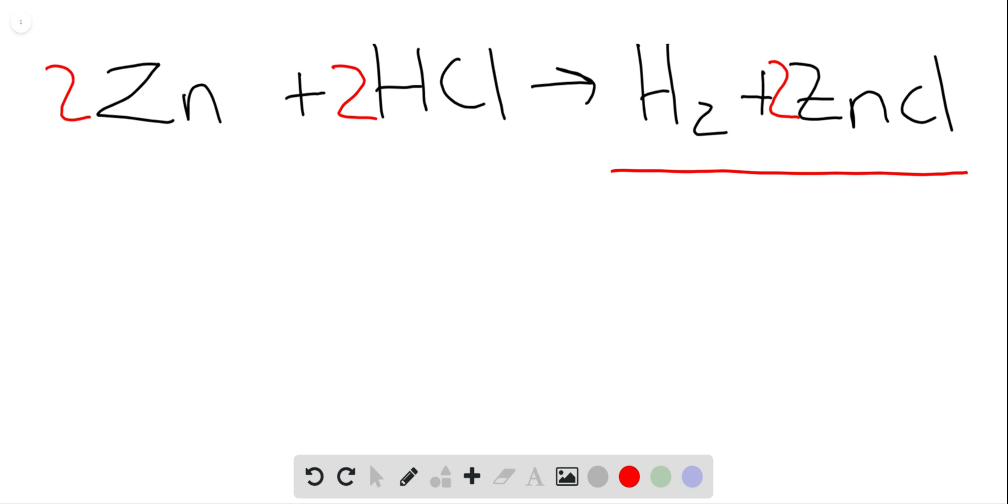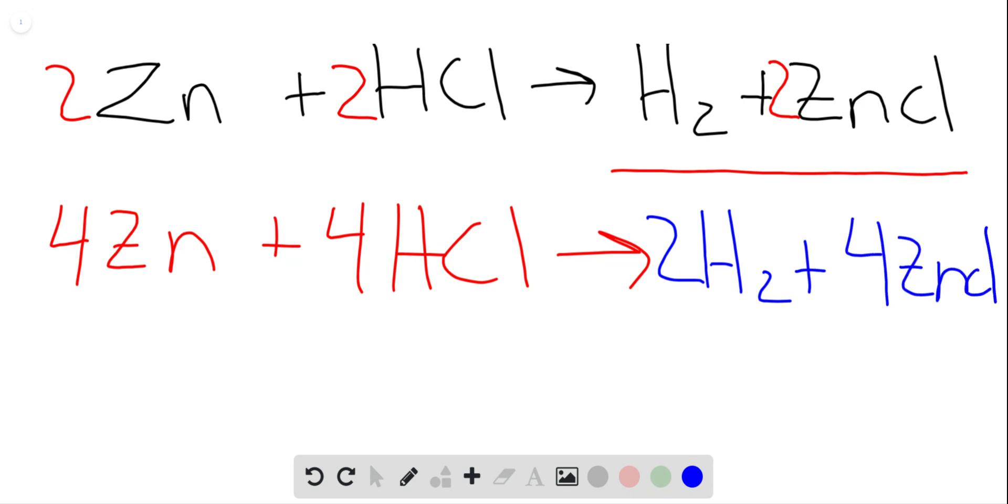Well if I was to maybe double this, and if I had maybe four moles of zinc and four moles of hydrochloric acid, well I could predict in this case that I would make two moles of hydrogen gas plus four moles of zinc chloride.